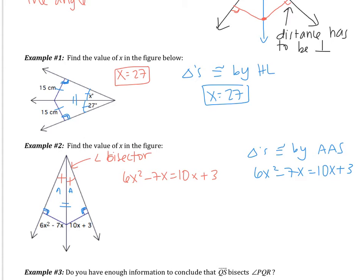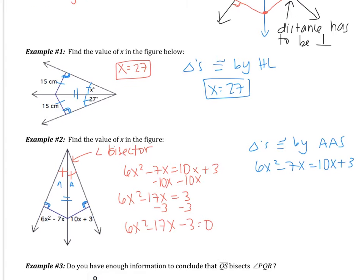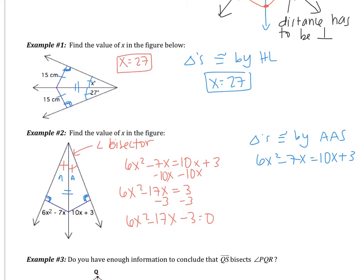Now we just need to solve that equation. This is an algebra review. I want to move everything to one side, so I get 6x² − 17x = 3. I'm going to subtract 3 to get 6x² − 17x − 3 = 0. Now this is a quadratic. The way to solve a quadratic is by factoring. We're going to have to split the middle. With splitting the middle, you multiply the first and last numbers: 6 and −3 gives −18. You're looking for two numbers that multiply to −18 and add to −17.